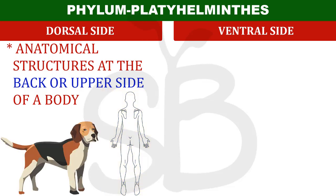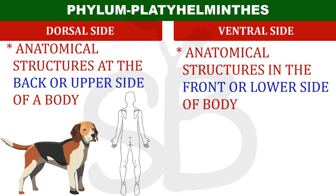The dorsal side is the upper side. Next is the ventral side. The ventral side is the opposite side of the dorsal side.